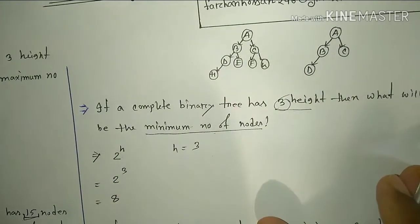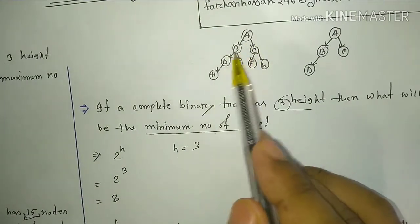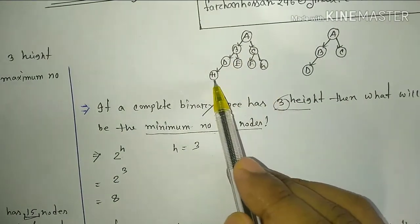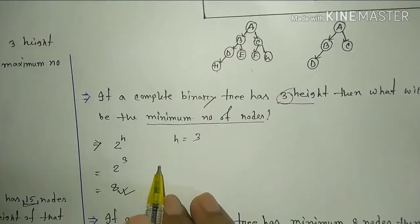So we can count: 1, 2, 3, 4, 5, 6, 7, 8. Therefore for height 3, the minimum number of nodes is 8.